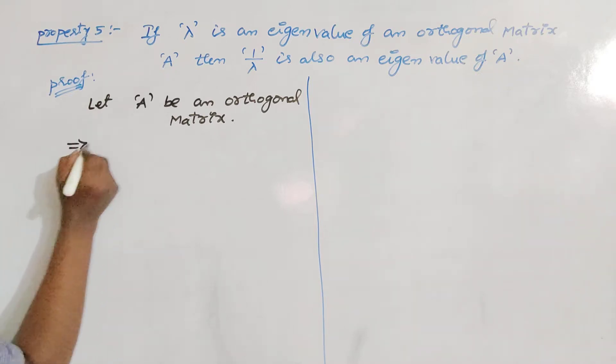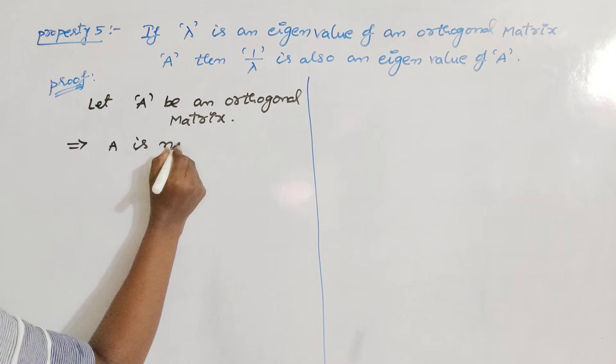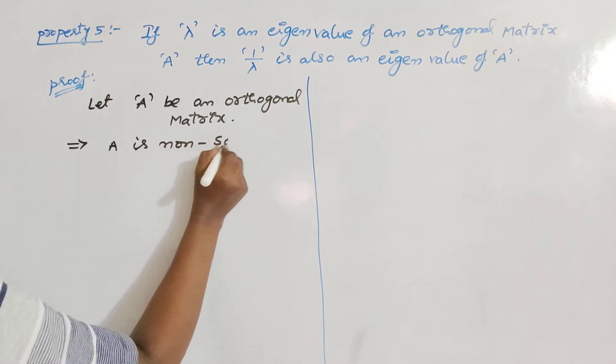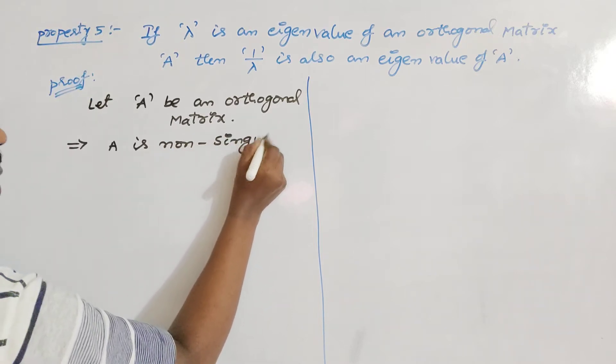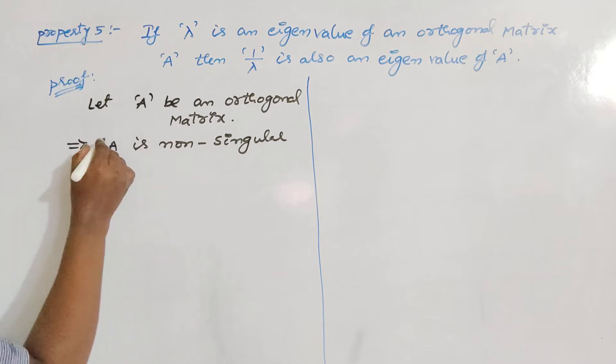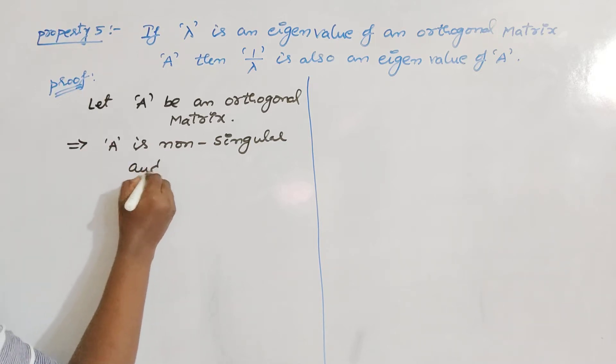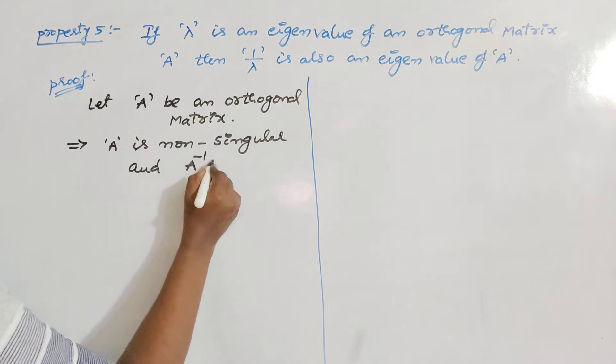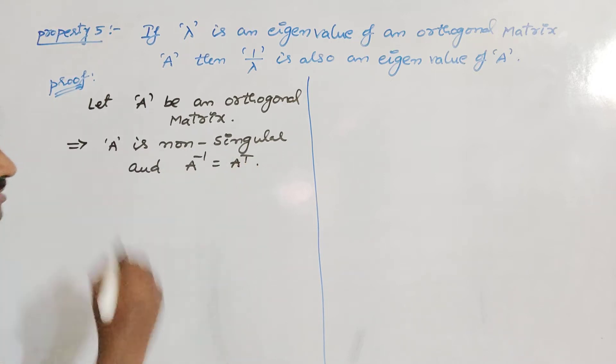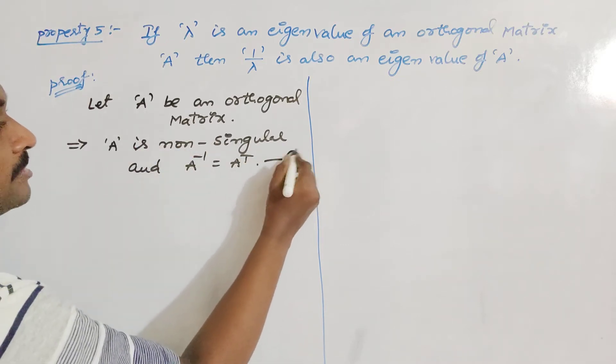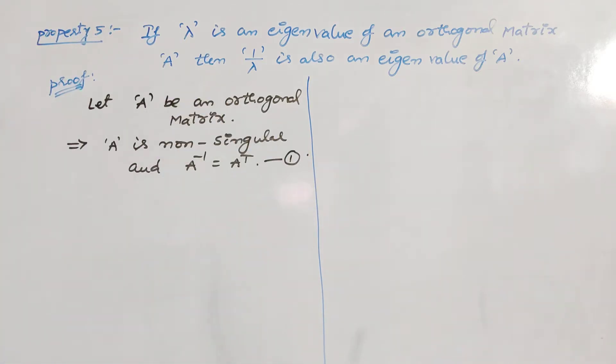A should be non-singular and whenever A is non-singular, it means that its inverse exists finitely and its inverse is just a transpose of A. If A is the orthogonal matrix, then its inverse is transpose only.